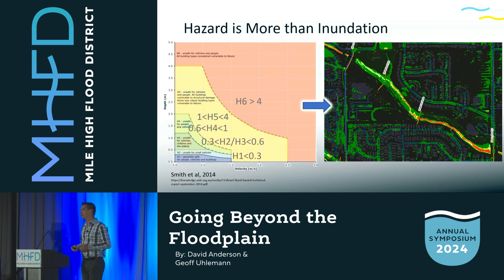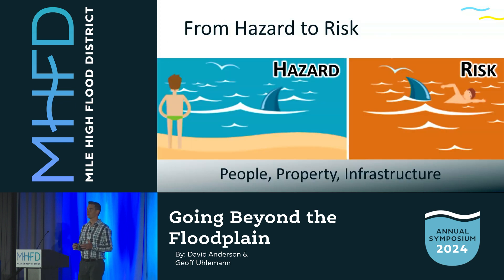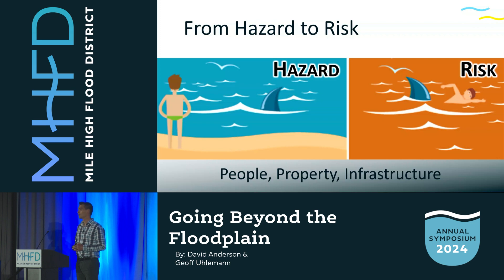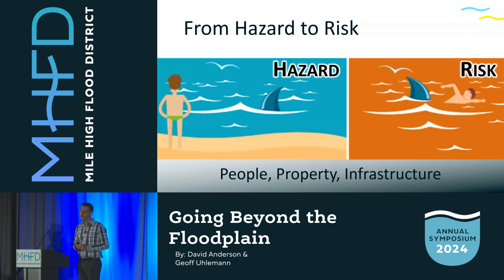What I like about that is it translates from hazard to risk. Most of what we deal with today is simply hazard — just an inundation extent; sometimes we'll do building counts to say how many structures are in the floodplain. But we're not actually looking at a risk profile, which is what we want to be moving toward. You can have as much hazard as you want, and if you don't have a receptor in the mix, it's not posing a risk. But the minute you put a receptor in that place — whether it's a person, a property, infrastructure, trails, crossings, or roads — now there's actually a risk to be assessed.